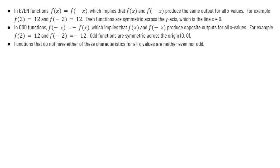Even functions satisfy f(x) = f(-x). This implies that f(x) and f(-x) produce the exact same output values for all x. For example, if I plug 2 into a function and get 12, I also need to get 12 when I plug in -2. Even functions are symmetric across the y-axis, which is the line x = 0.